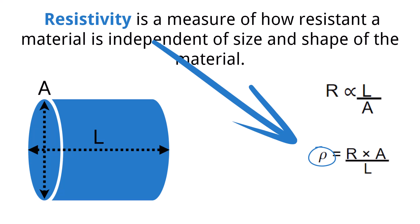The resistivity of the material is calculated based on the resistance of the material times the cross-sectional area divided by the length of the material. Resistivity is represented by rho (ρ), and equals the resistance R times the cross-sectional area A divided by the length L. This value is useful to know because it provides insight into the resistance of different materials and can help inform the choices used when constructing circuits.